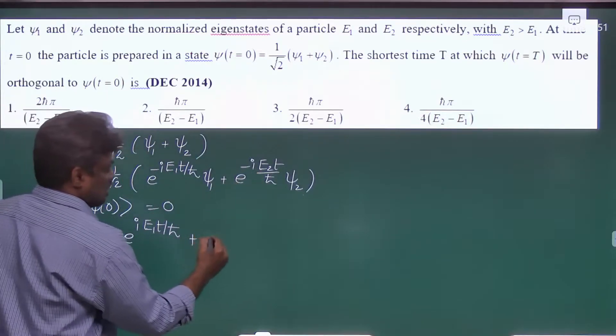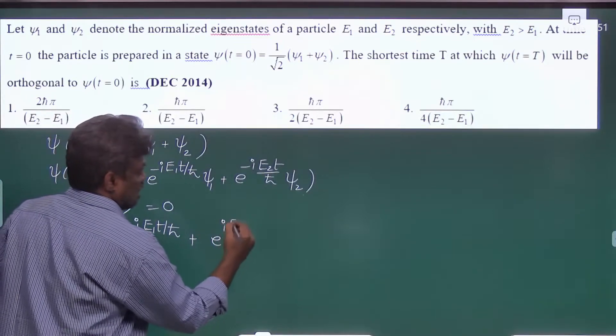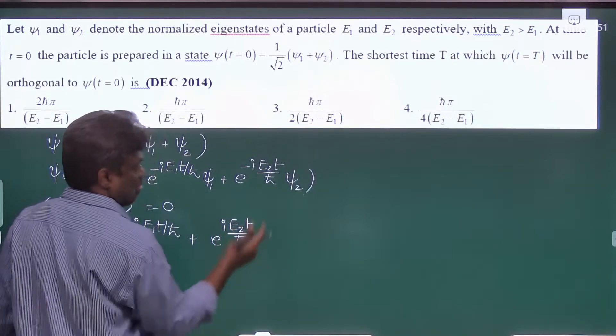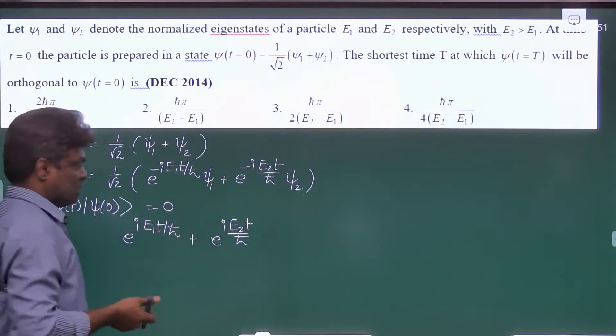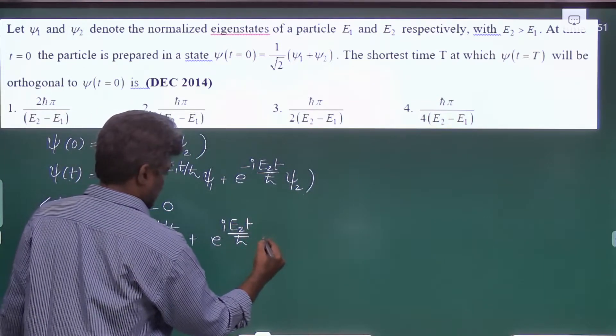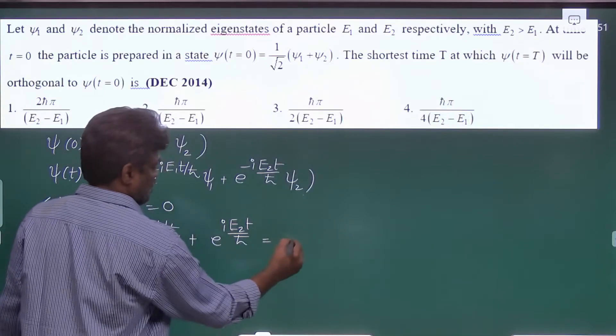plus, this is in the bra vector, that's why e2 t by h cross, and this is Psi 2 and Psi 2 inner product is also equal to 1. So this is equal to 0.